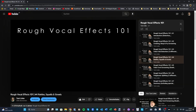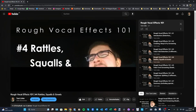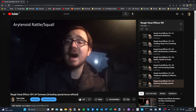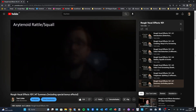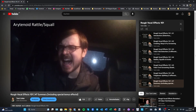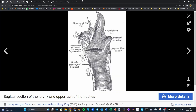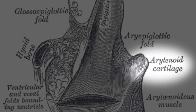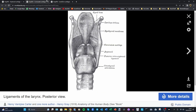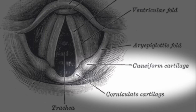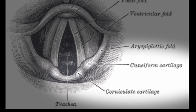Episode 4 of Rough Vocal Effects 101 deals with rattles, squalls and growls, all of which I have introduced as arytenoid-based effects. The arytenoid cartilages are two bumps at the back of the larynx that are mainly responsible for closing and opening the vocal folds. But at the top of the arytenoids there are some small extra bumps — namely the corniculate cartilages and the cuneiform cartilages — and those are actually the parts that vibrate against each other when I speak of arytenoid vibration.